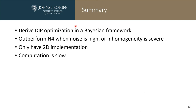In summary, we derived the deep image prior optimization objective functions in a Bayesian framework, and our proposed method can outperform N4 when noise is high or inhomogeneity is severe. There are also some drawbacks: first, we only have a 2D implementation; second, because the network is updated online, the computation is very slow. This concludes my presentation. Thank you for listening. I would like to thank my colleagues in my lab at Johns Hopkins.